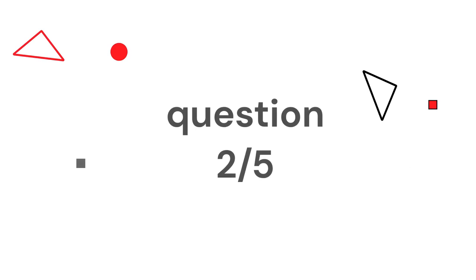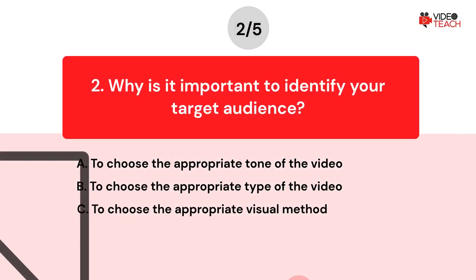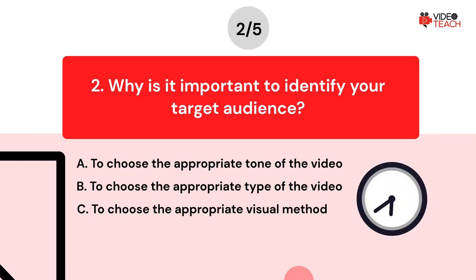Question number two. Why is it important to identify your target audience? Option A — to choose the appropriate tone of the video. Option B — to choose the appropriate type of the video. Option C — to choose the appropriate visual method. Now you have about 15 seconds to think about your answer.